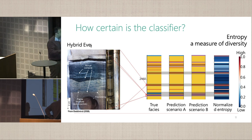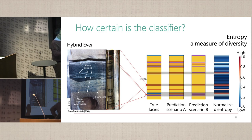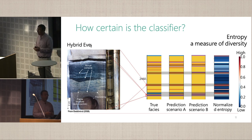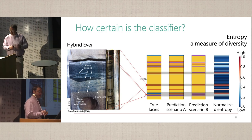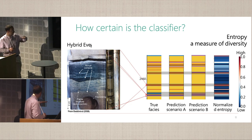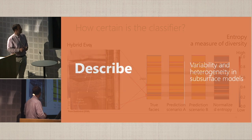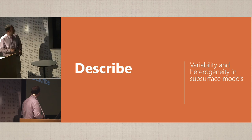Across those 20 scenarios, we can obtain normalized entropy, which is the measure of diversity. This entropy highlights the intervals where the classifier is less certain which scenario it is, and these could be flagged as the potential zones with high risk of barriers.